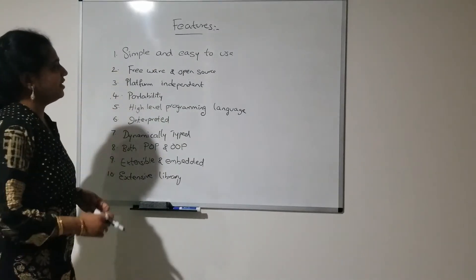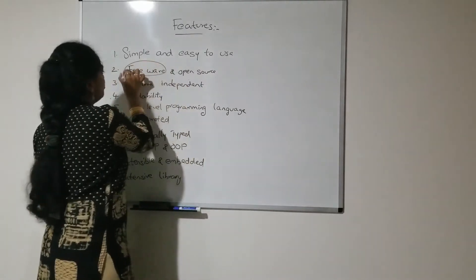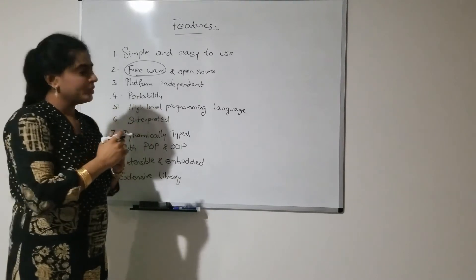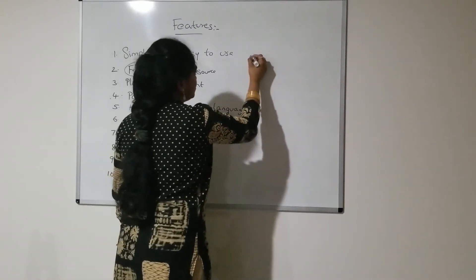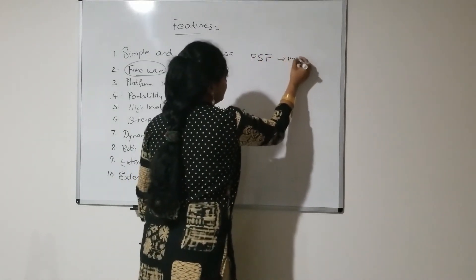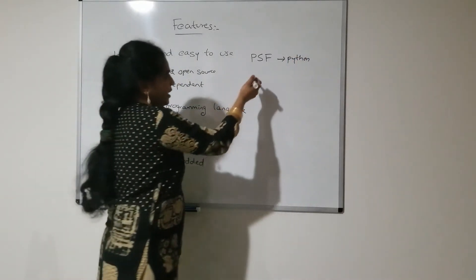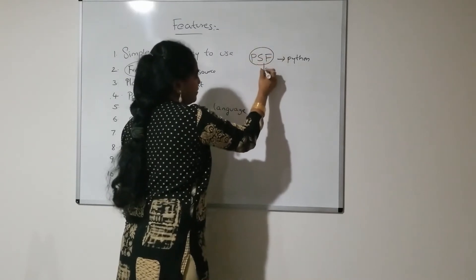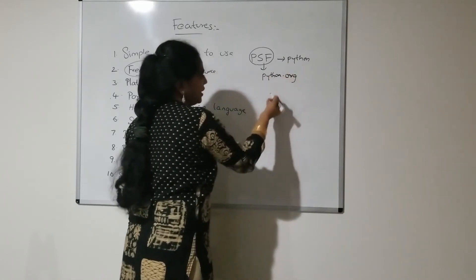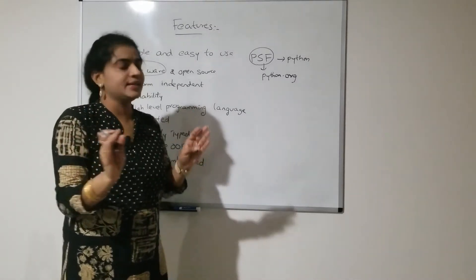Coming to the second feature: freeware and open source. Freeware means no need to pay any money for the license — it is free to use. The Python Software Foundation is a non-profit organization that takes care of Python. They maintain an official website, python.org, and you can directly go to that website and download Python. No need to pay any money for the license — that is called freeware.